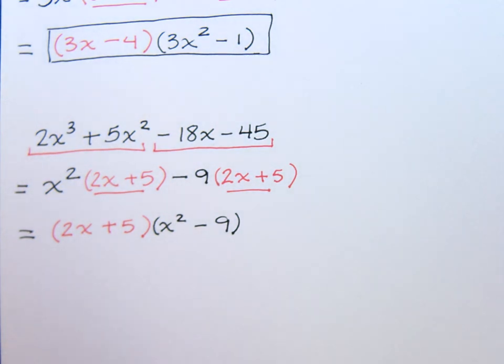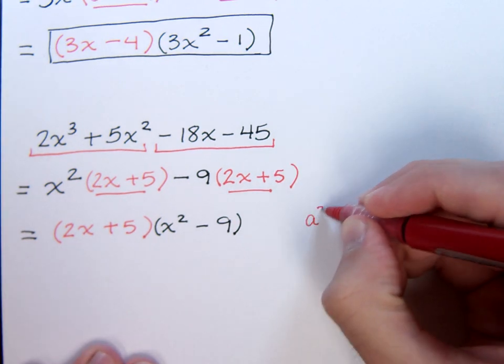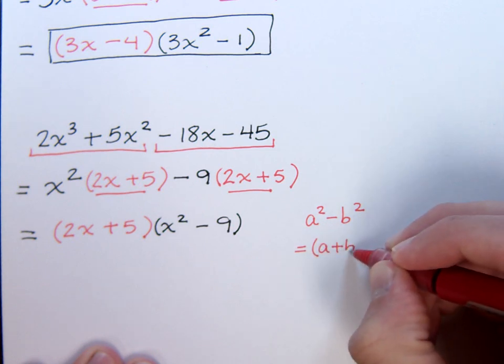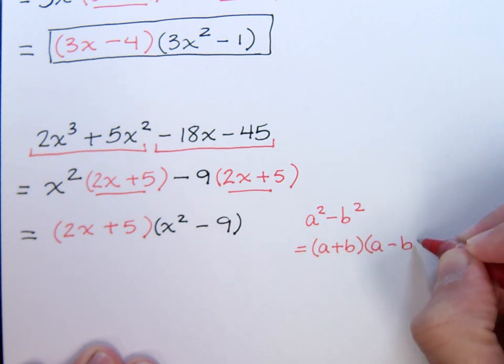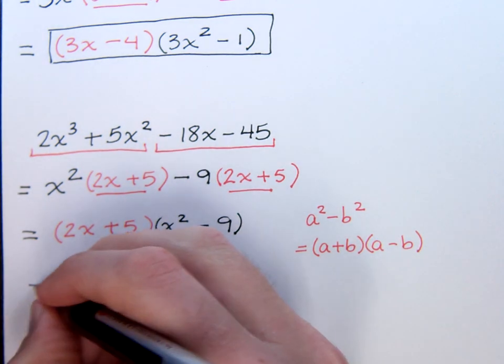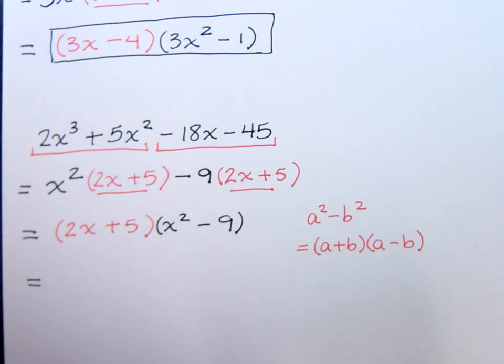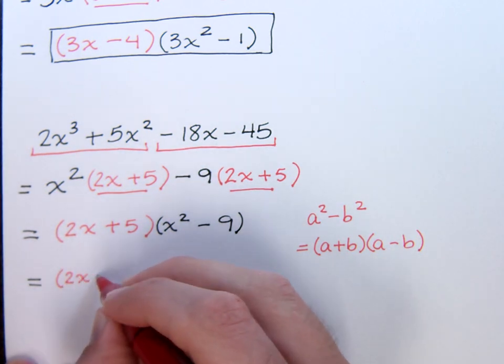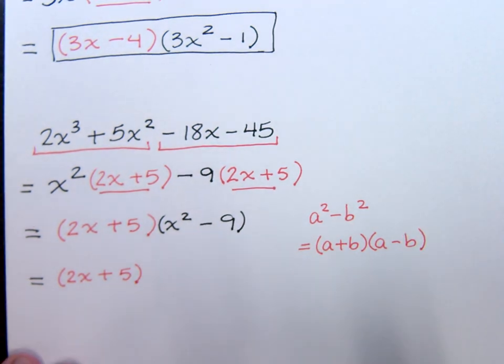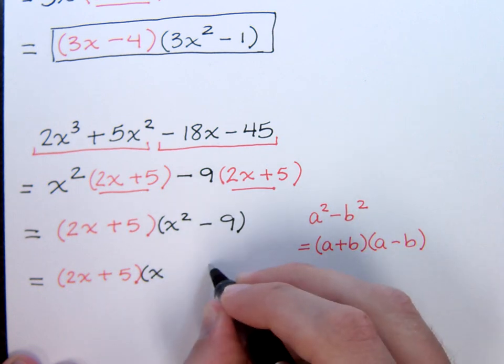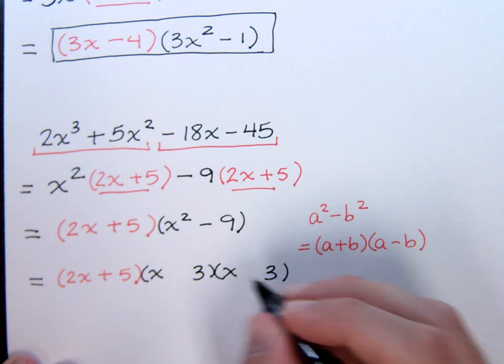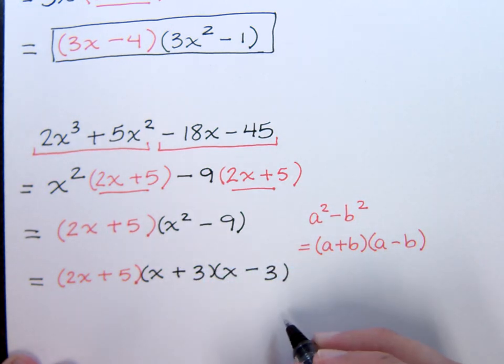The x squared minus nine is actually a difference of squares. Remember that when you have something of the form a squared minus b squared, it's going to break down as a plus b times a minus b. So, in this problem, I'm going to bring the two x plus five down because I can't do anything else with him. But the x squared minus nine will factor further. x squared is the square of x and nine is the square of three. So, I put my plus, my minus, and now I'm done.